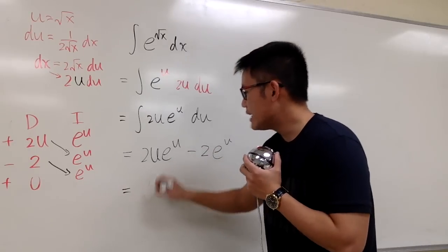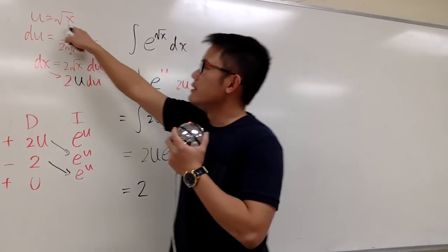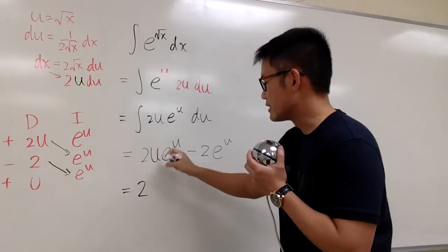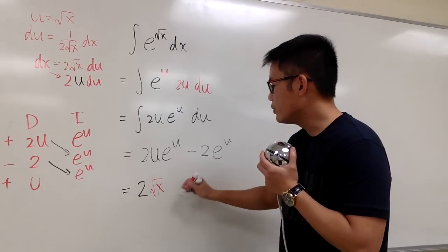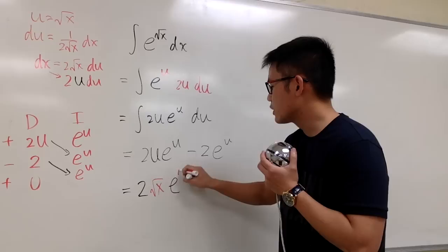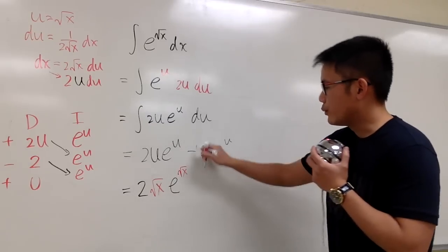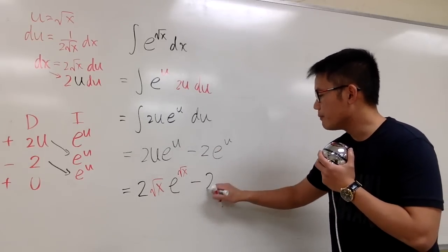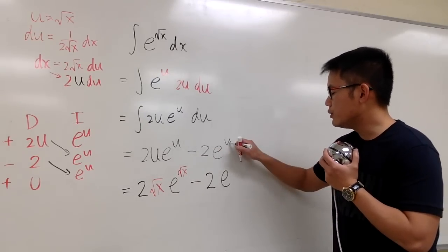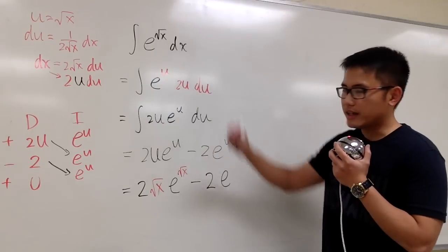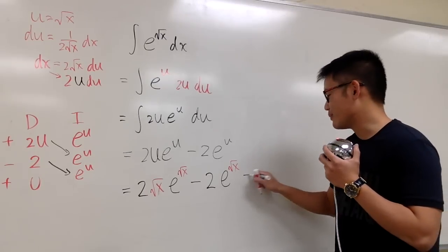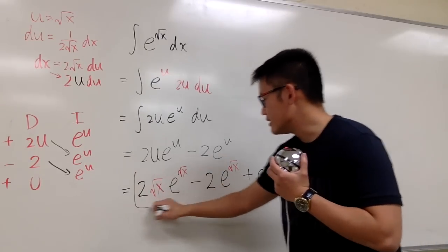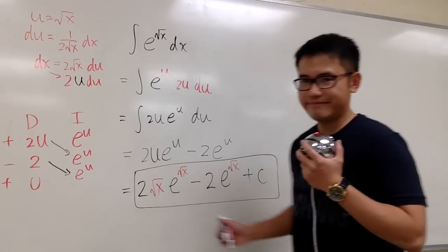Okay. We see that 2 is just a 2, but u is the square root of x. So, I just have to substitute back 2 square root of x. And then e to the u is e to the square root of x. And then we will have minus 2 e to this u, which is also the same as square root of x. And then we are all done. So, I put a plus c at the end. This is the answer. That's it.